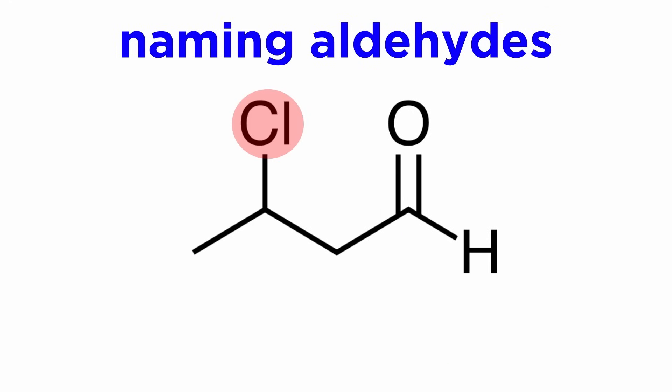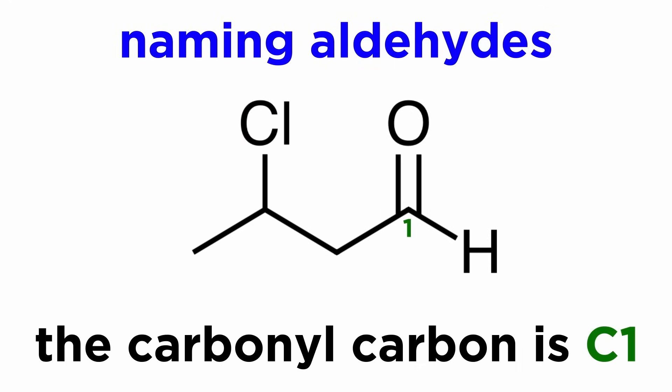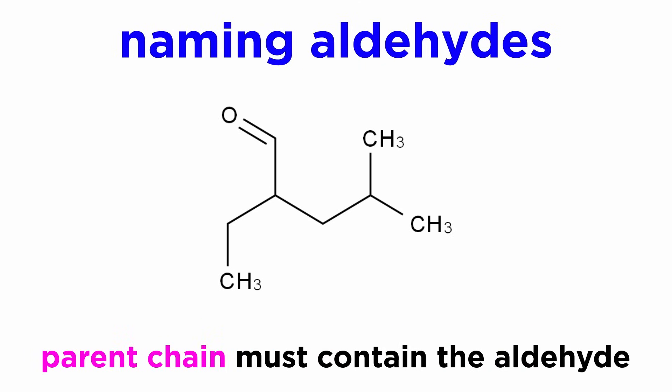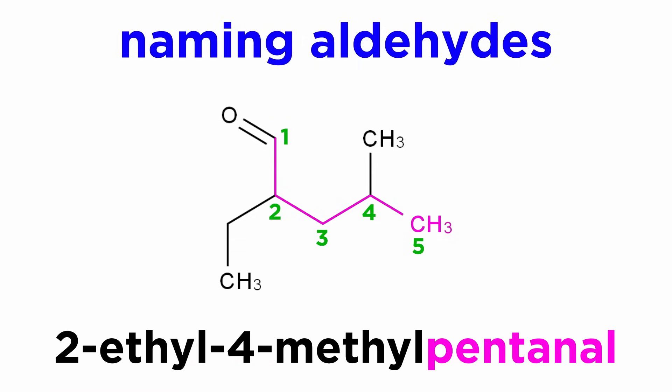If there are substituents present, we will always label the carbonyl carbon as carbon 1, and then move along the chain from there. So this would be 3-chlorobutanal. The parent chain must contain the aldehyde, so even if there is a longer chain possible, the longest chain containing the aldehyde must be the parent chain. So this is 2-ethyl-4-methylpentanal, even though there is a 6-carbon chain present.